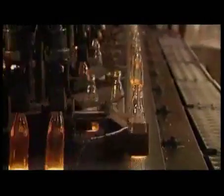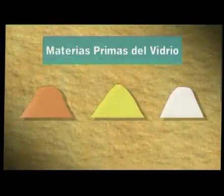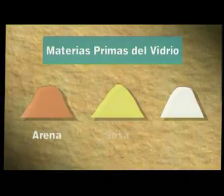El vidrio es inerte, higiénico, fácilmente moldeable, reciclable y tiene buena presentación. Las materias primas utilizadas en la fabricación del vidrio son arena, sosa y caliza, además de otras secundarias. Estas materias primas, convenientemente mezcladas, son fundidas en hornos a 1500 grados centígrados, transformándose en un líquido viscoso amarillo rojizo.